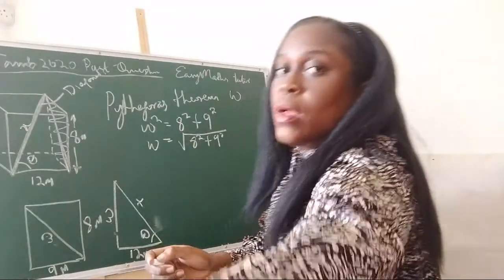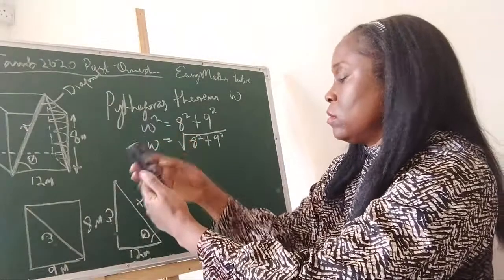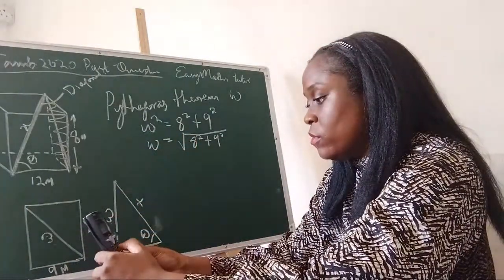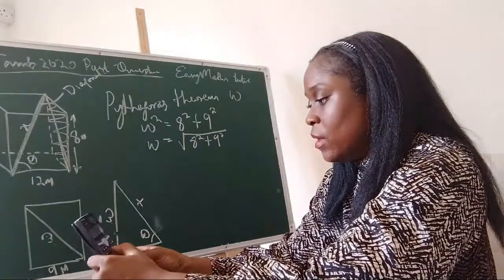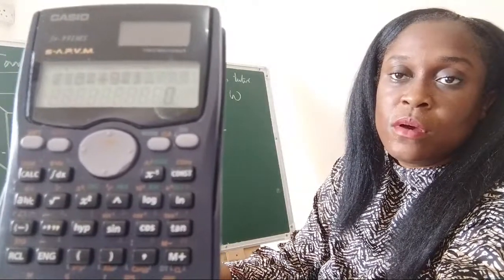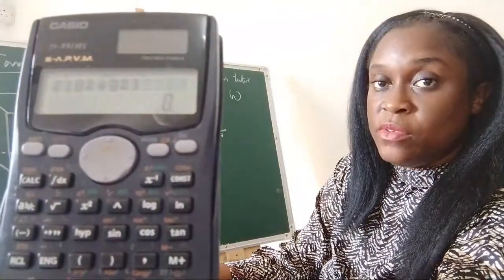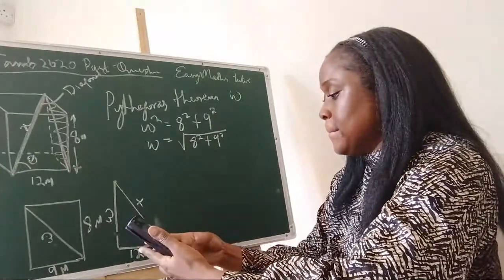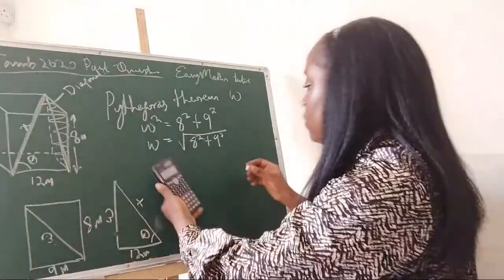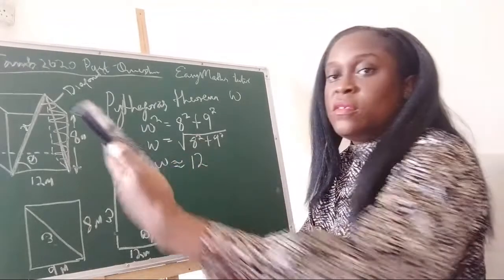Using my calculator: the square root of (8² + 9²). My answer is approximately 12. So w is approximately 12 meters.